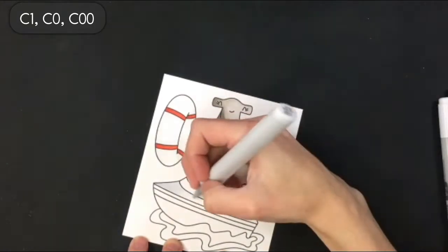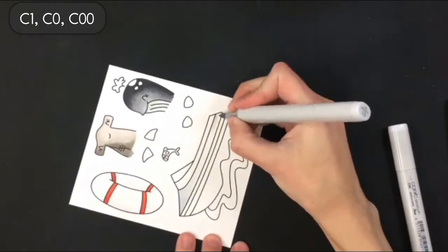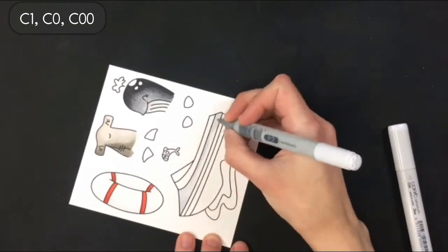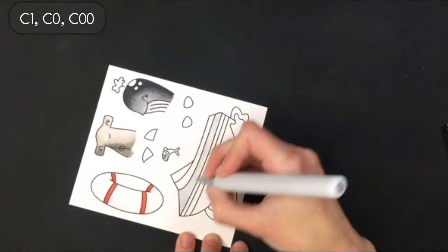Then I am coming in with my cool Copics in the gray shade to do the boat so it kind of looks like a white gray but it still has some dimension to it.